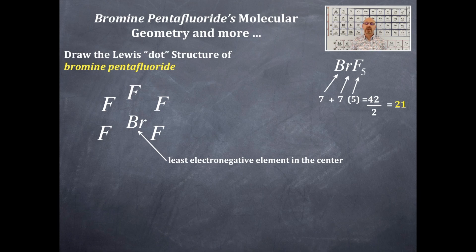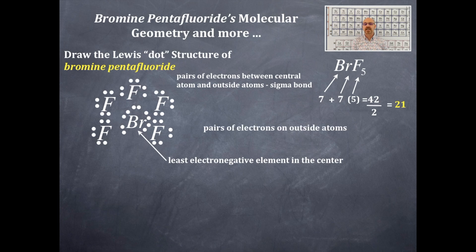Now we place pairs of electrons between the central element and outside elements. That gives us this. Now we place pairs of electrons as lone pairs on the outside elements.